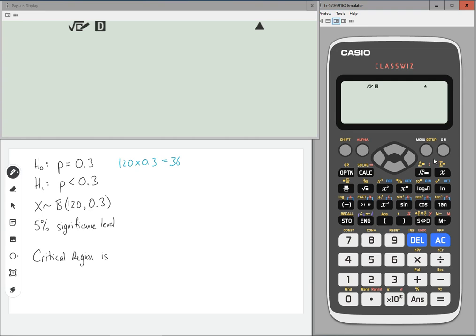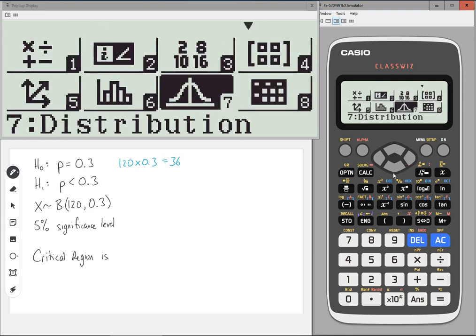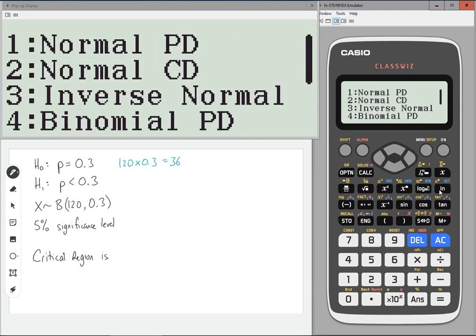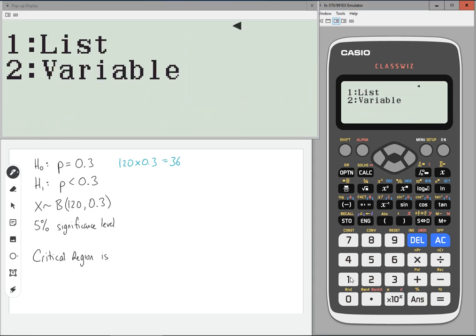Now we're going to use the binomial cd function, which is what you should be using for any binomial hypothesis test. And we're going to be using the list section of that. So go to menu, and then number seven, distribution, and then scroll down to binomial cd, number one, and go into list.